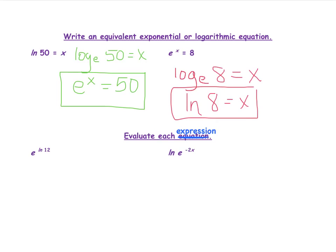Now let's look at evaluating expressions where you have base e raised to a natural log, or where you are taking the natural log of base e. The first one is e to the ln of 12 power. We could put this in the calculator, but the answer will always be the argument of the natural log, so the answer is 12. For the natural log of e to the negative 2x power, the answer will always be the exponent, so the answer is negative 2x.